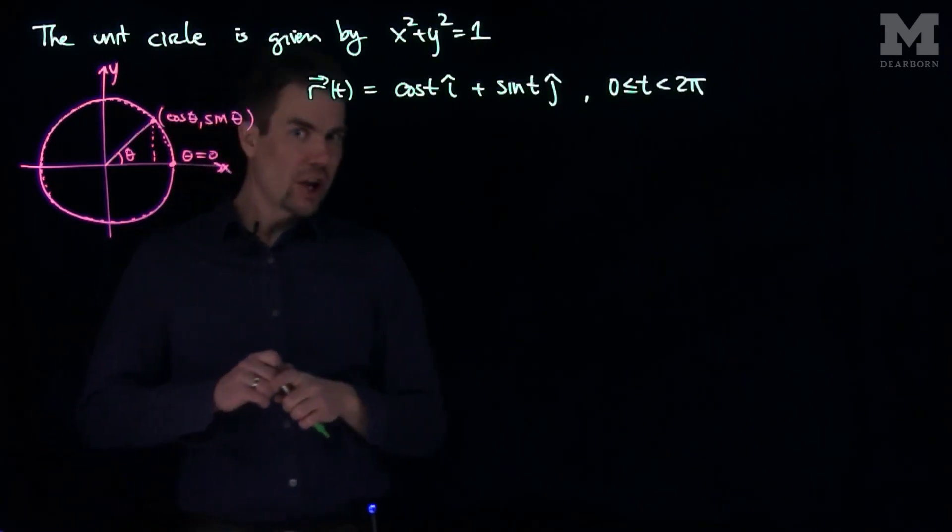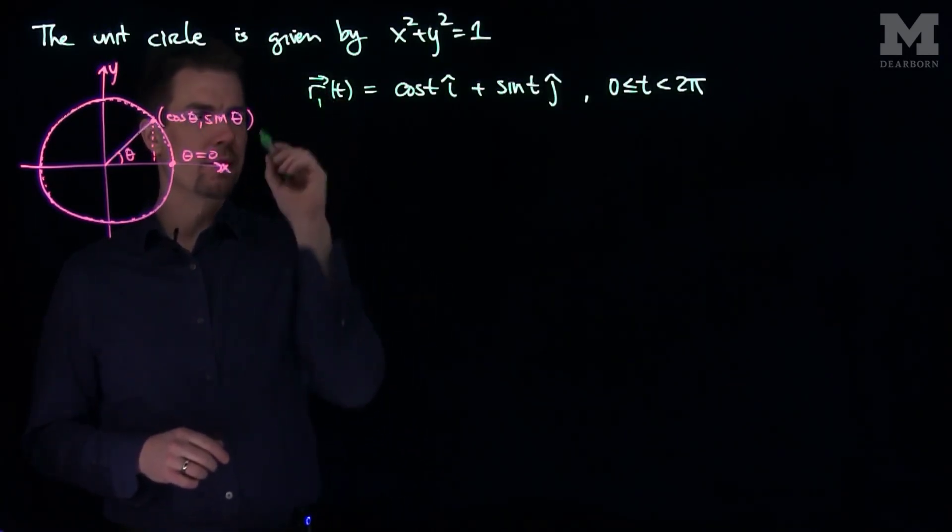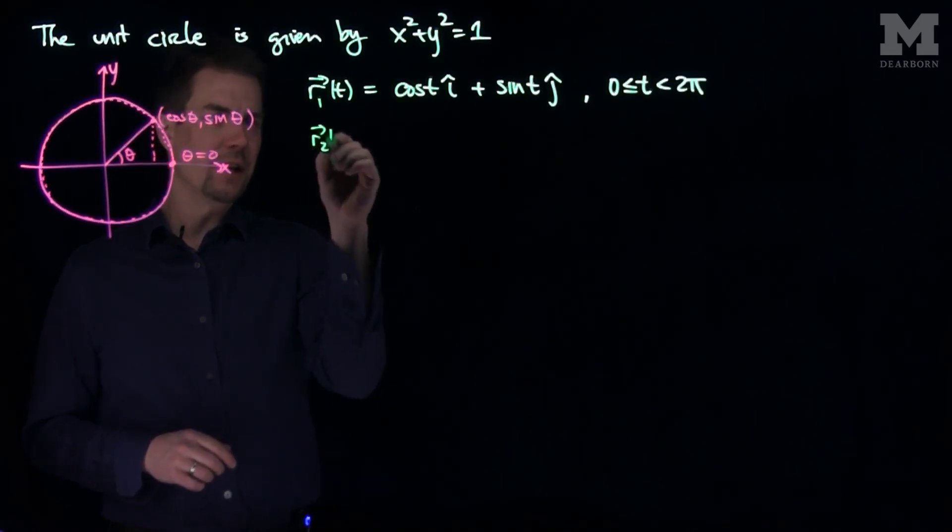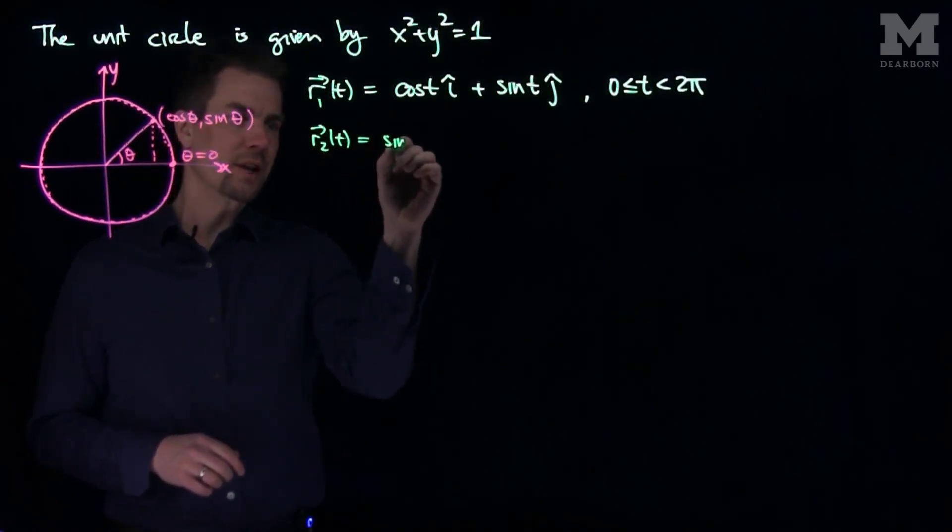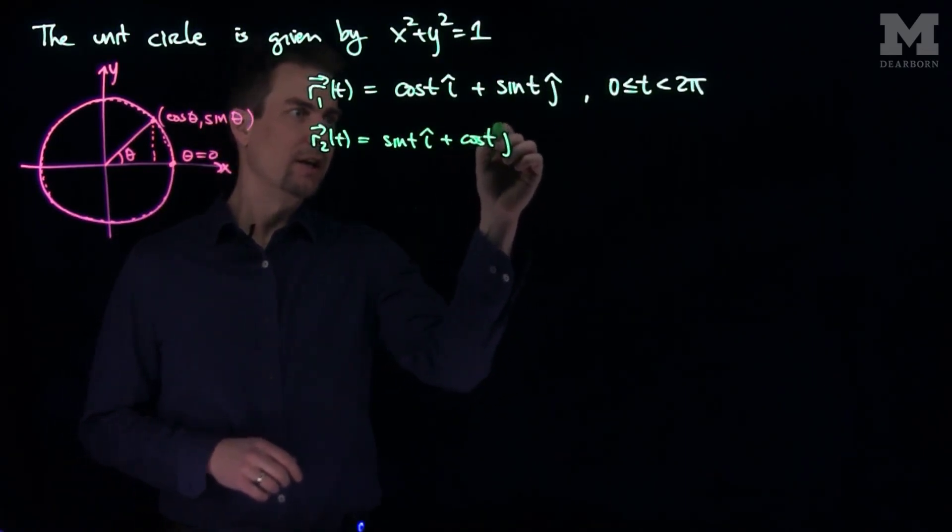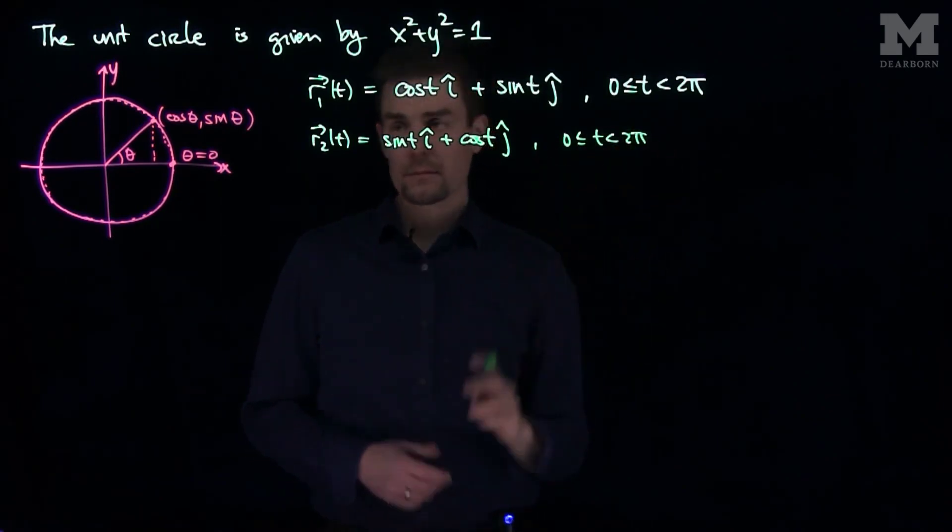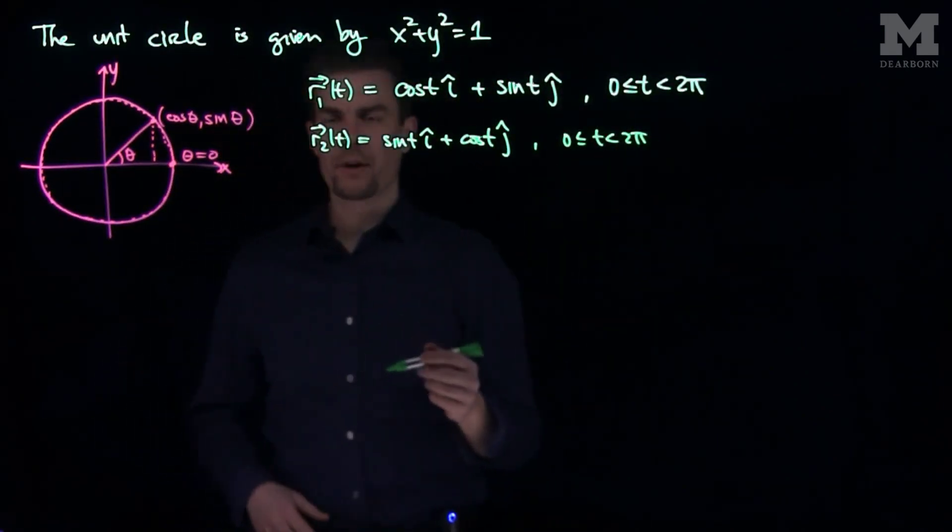However, we could have changed things a little bit. We could have looked at something like this. If I look, for example, let's call this r1, but if we looked at r2(t), which was sin(t) i hat plus cos(t) j hat for t between 0 and 2π, we'll look at the unit circle, but we'll just start somewhere different.